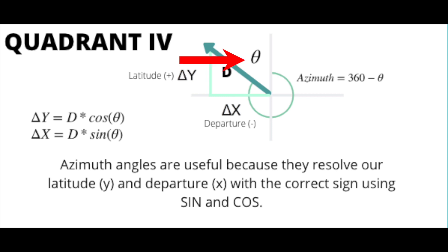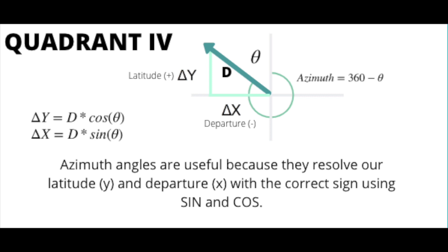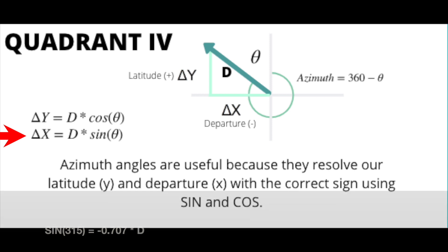Theta is actually the angle between the vertical and the vector. In our previous video we saw that for NW district we do want that angle between the vector and the vertical. But if we use the azimuth angle — which is 360 minus theta — the natural tendency for sine and cosine to oscillate between positive and negative will resolve our latitudes and departures to the correct sign. For example, if theta is 45 degrees, the azimuth angle is 315 degrees, and sine of 315 is indeed negative, matching our expectation that delta X is negative.